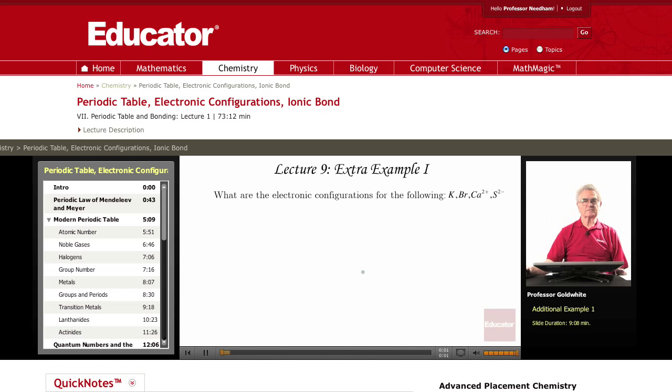This problem asks you to write out in full the electronic configurations of a number of species: a couple of neutral atoms, potassium K and bromine Br, and a couple of ions.